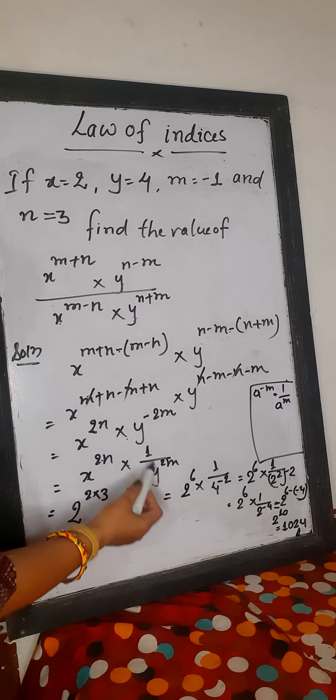x to the power m and m reduce ho jaya, so we get x to the power 2m into y to the power minus 2m. And x to the power 2m into 1 by y to the power 2m.